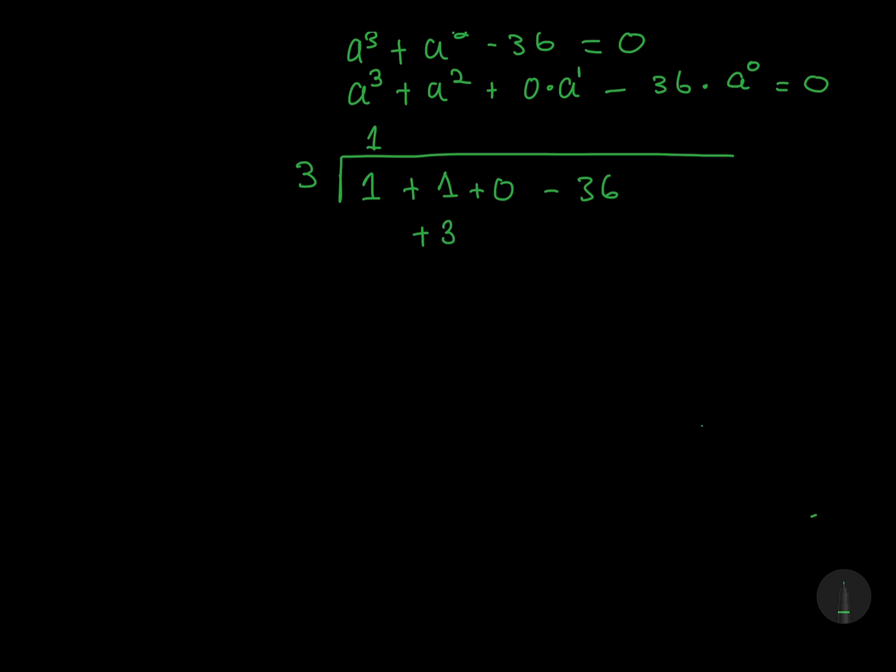And I'm going to add 1 and 3, which will give us positive 4. And I'm going to say that positive 4 multiplied by 3, which will give us positive 12, and say 0 plus 12, which is 12, and say that 12 multiplied by 3, which is plus 36. Notice that the last term gives us 0, which means 3 is our root.